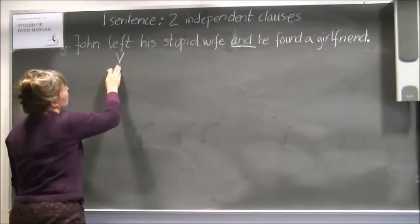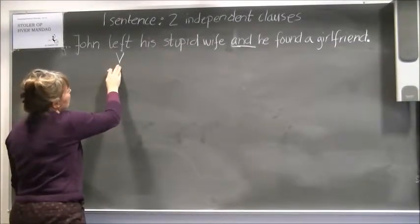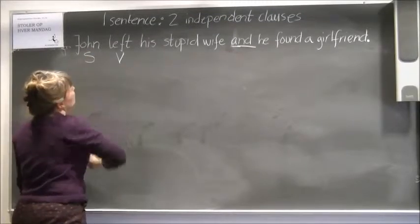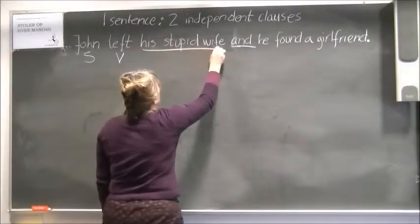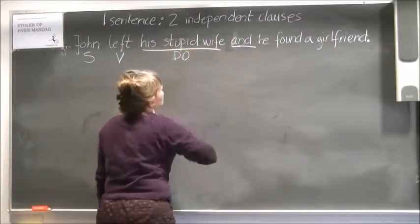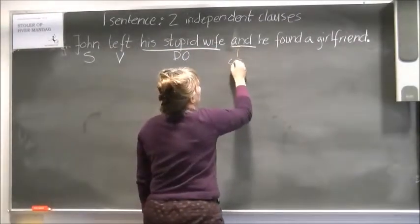So I start by finding a verbal: left. Who left? John left. What did John leave? His stupid wife. All of this is a direct object. Then you have a coordinating conjunction.